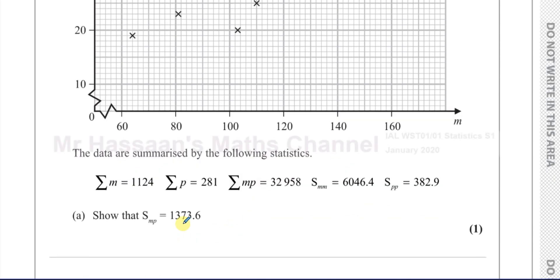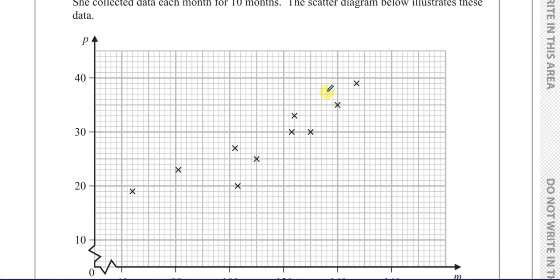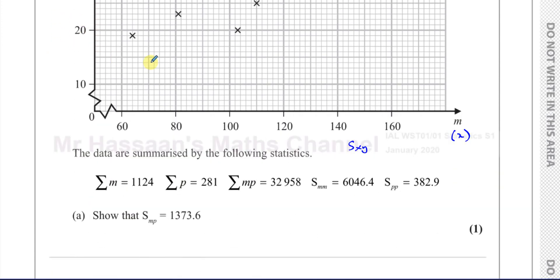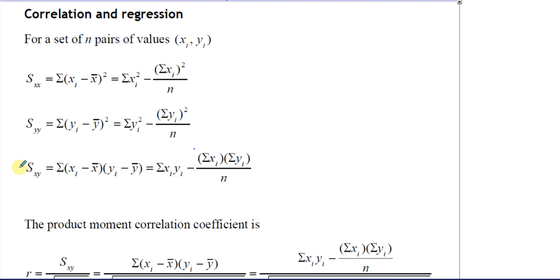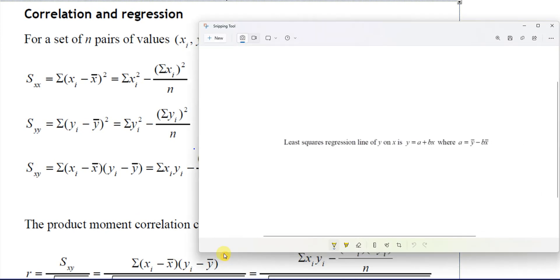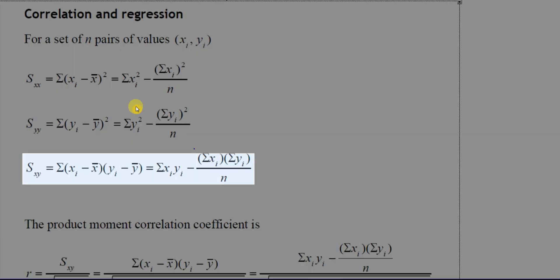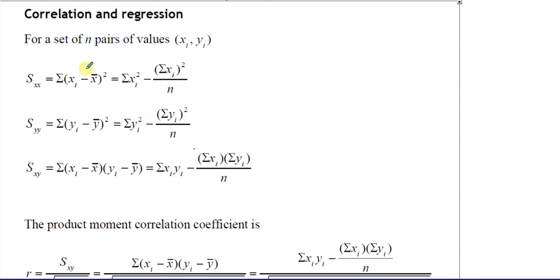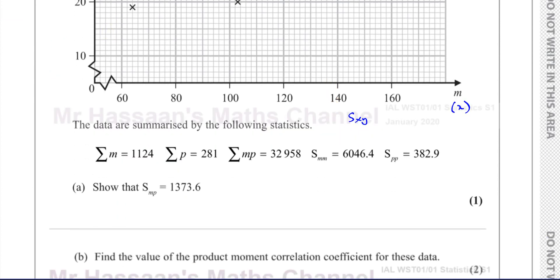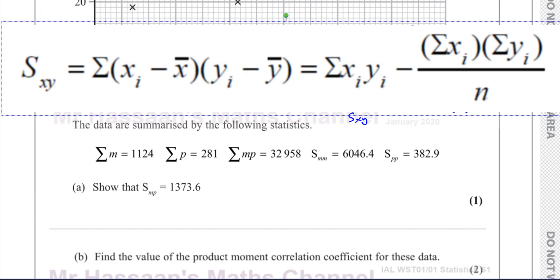What we need to do is use the formula for SMP. There's a formula in the formula sheet for S_XY. In this case, our X is M and our Y is P, because that's what takes place on the axes. So if we go to the formula sheet, we're looking for S_XY, which is given by the formula shown there.